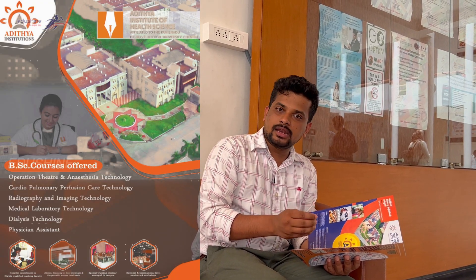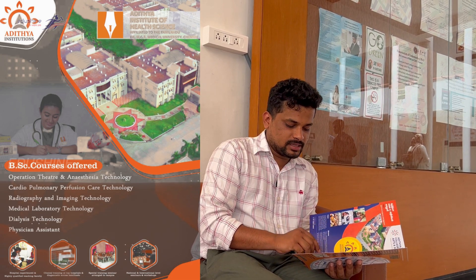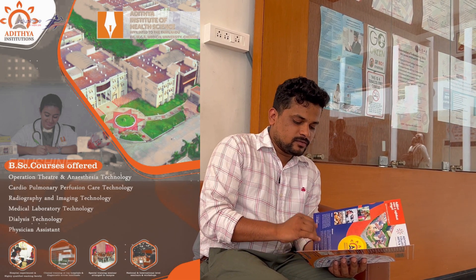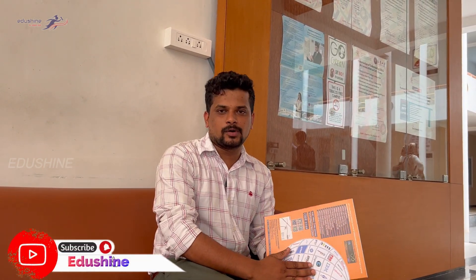That covers the engineering courses. For Allied Health Sciences, there are courses including operation theater, anastasia technology, radiology, dialysis, and physician assistant. The institution has three main areas, and if you are a student, there are separate blocks — one for engineering, one for arts and sciences, and one for health sciences.